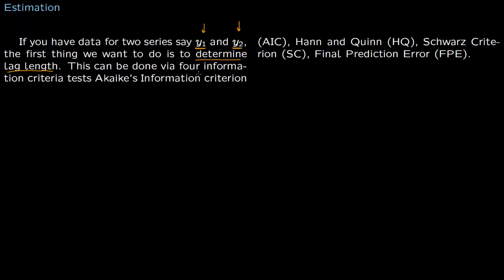This can be done in R. There are four information criteria which tell you: the first one is Akaike's information criterion which is called AIC, then there is Hann and Quinn HQ, the Schwarz criterion SC, and there is one called final prediction error FPE. We will run these four criterion on these two series y1 and y2.